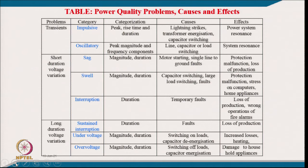Short-duration voltage variations include sag, swell, and interruption, quantified by magnitude and duration. Sag can be caused by large motor starting or single-phase line-to-ground faults, and affects protection system function. Swell results from capacitor switching or large load switching off, and stresses computers and home appliances. Interruption — common in India — may be due to temporary fault and causes loss of production and wrong operation of fire alarms.